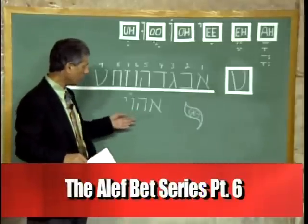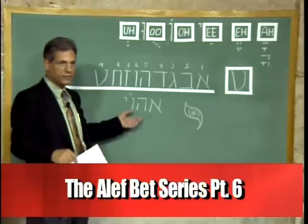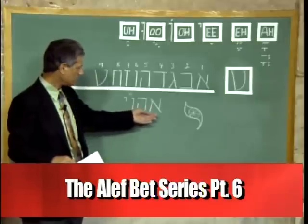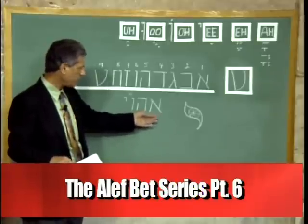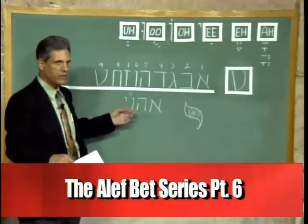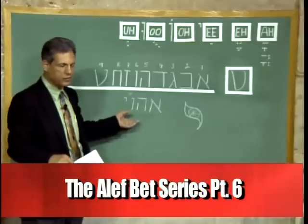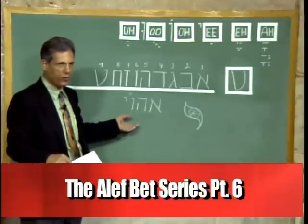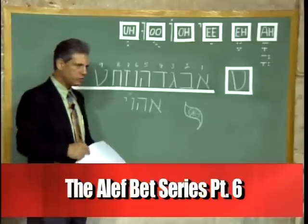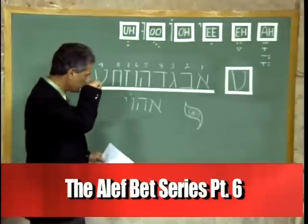We call those the AHOY letters. Why AHOY? Because we have the Aleph, the He, the Vav, and the Yud. If it were a word, it could be read 'ahoy,' but it's not a word. We just use it to remind ourselves.